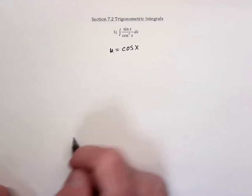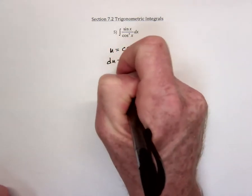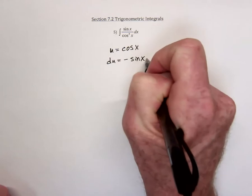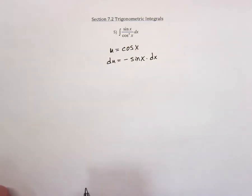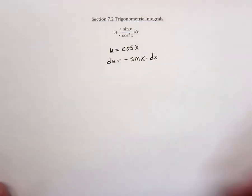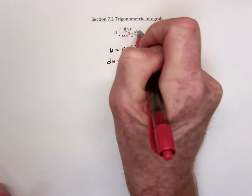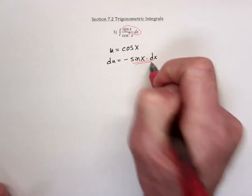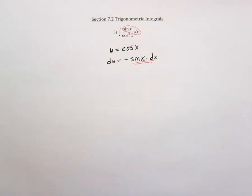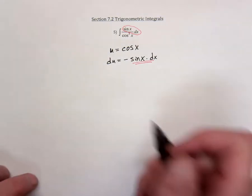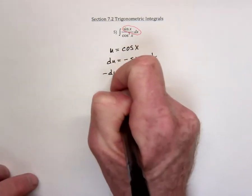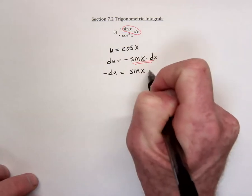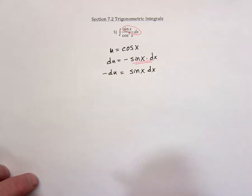So then the derivative is going to be negative sine of x. The idea is to get this and this to match perfectly. Other than a negative sign, we've got it. So just multiply both sides by a negative 1 and then it's ready for u-substitution.